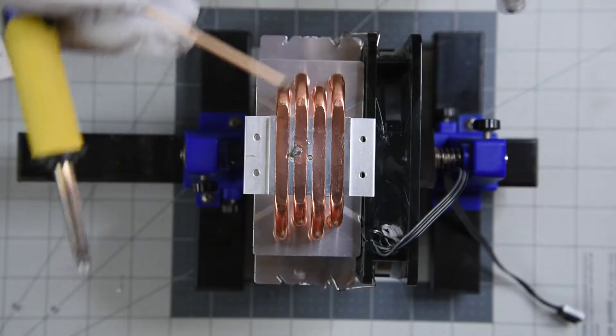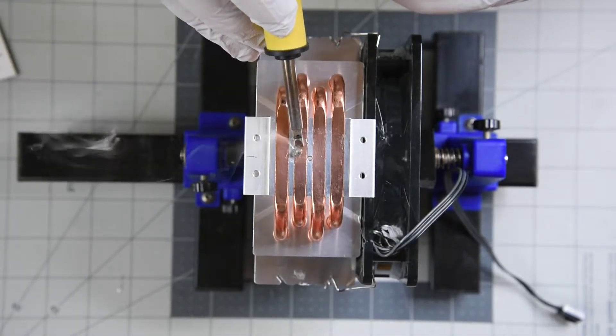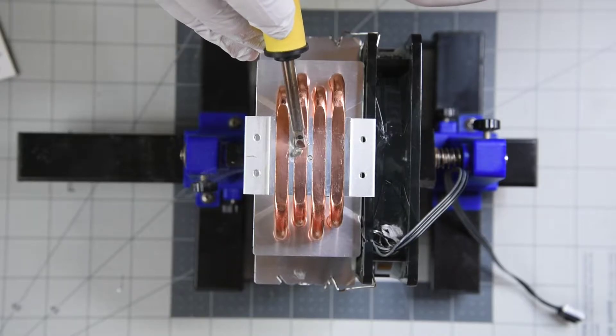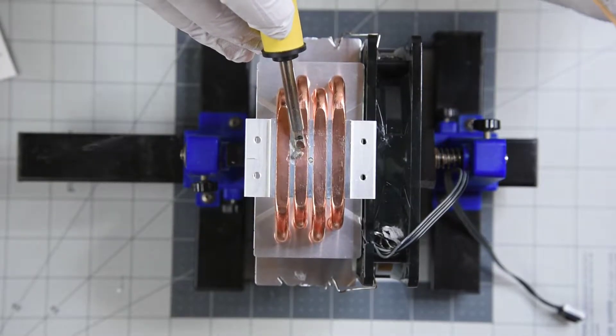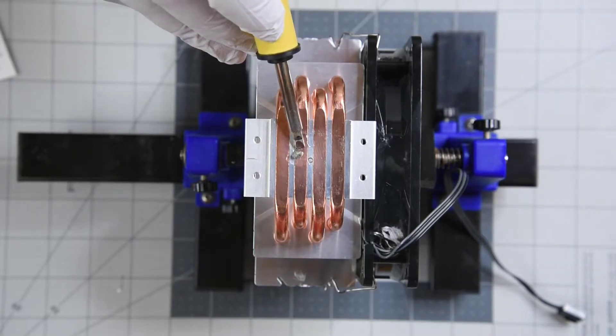I used some very low melting temperature solder paste to fill in the dent. It's tin, bismuth, and silver and melts at less than 300 degrees Fahrenheit. It melted to the heat pipe easier than I expected.